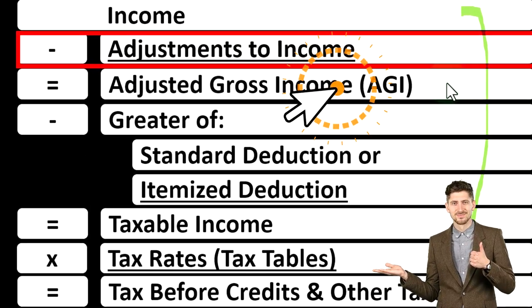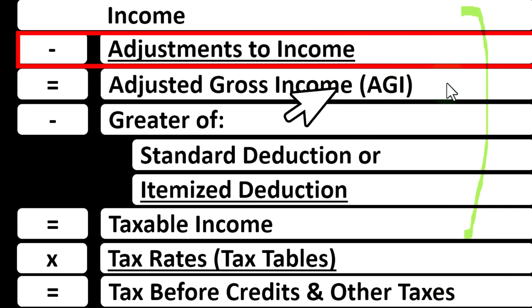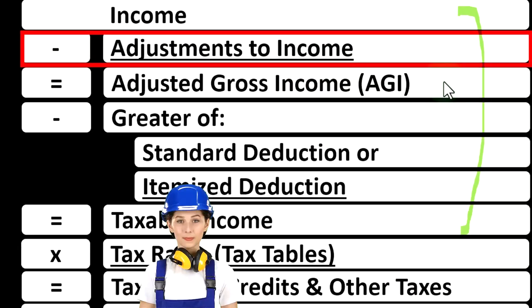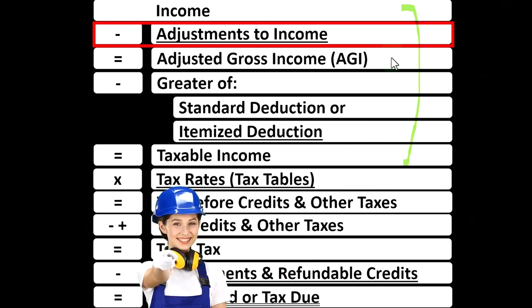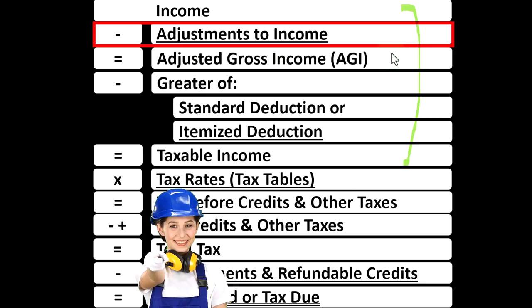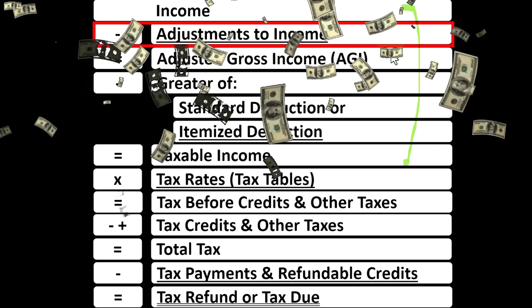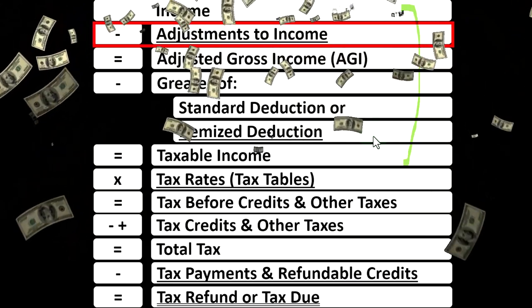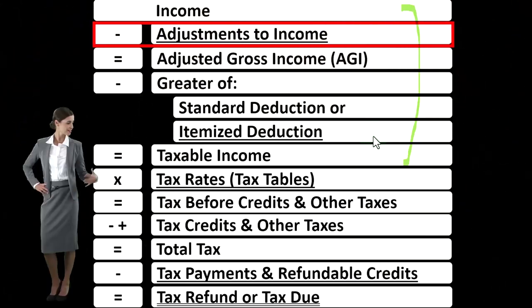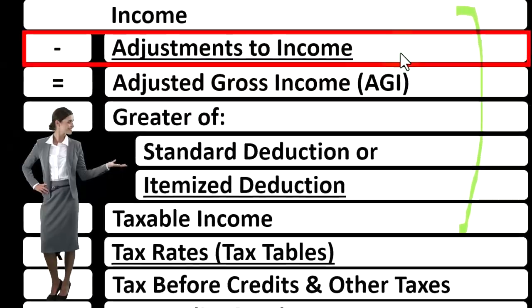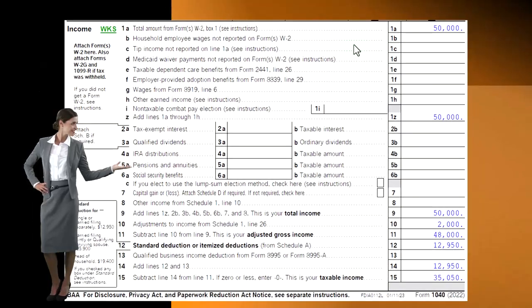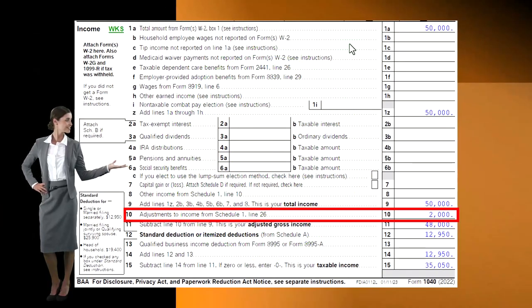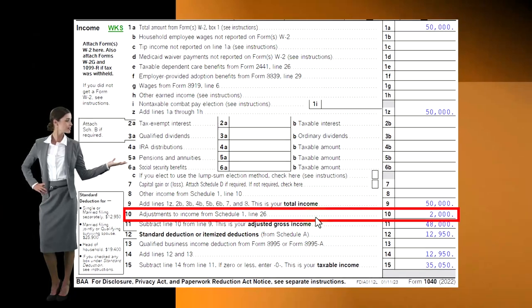These adjustments bring us down to the key number: the AGI, the Adjusted Gross Income — a number often used to calculate phase-outs on deductions and credits as income levels rise. Also note that we don't have the same kind of hurdle with adjustments to income as we do with itemized deductions. So if we qualify for an above-the-line deduction, we can take it even if we don't clear the standard deduction threshold.